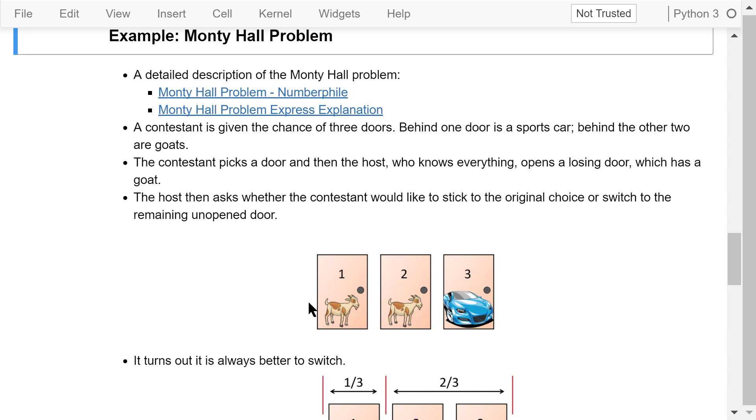The contestant picks a door, say number 1, and then the host, who knows everything, opens a losing door, say number 2, which has a goat. The host then asks whether the contestant would like to stick to the original choice or switch to the remaining unopened door, number 3. It turns out it is always better to switch.